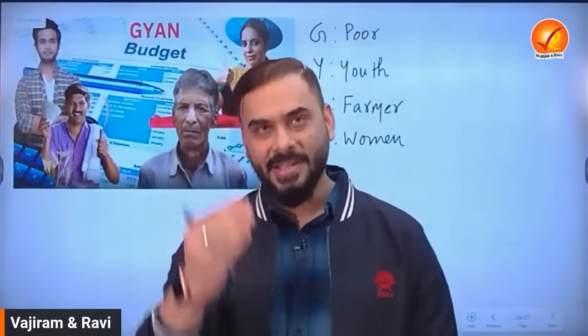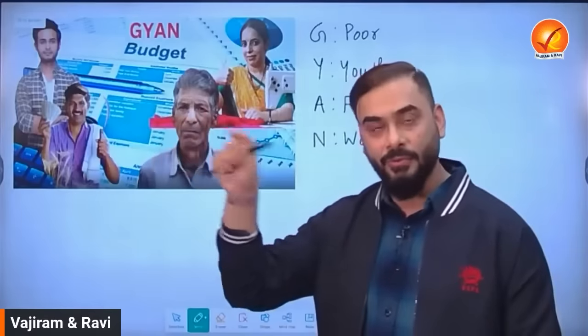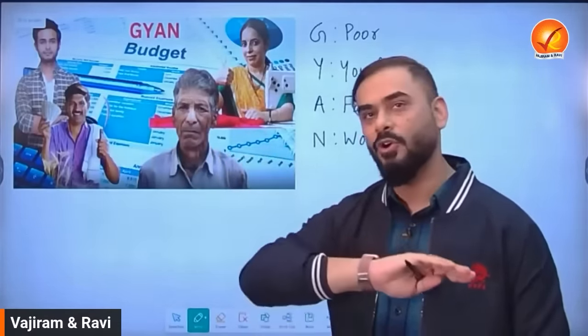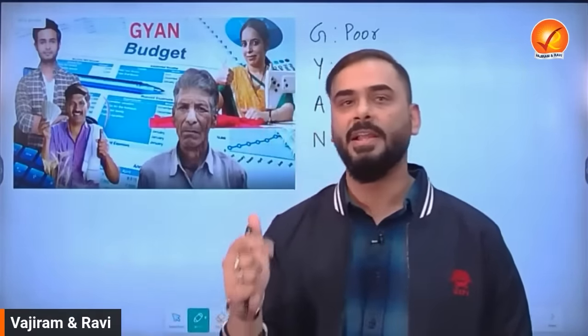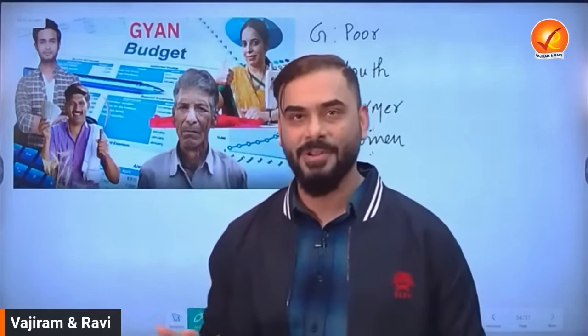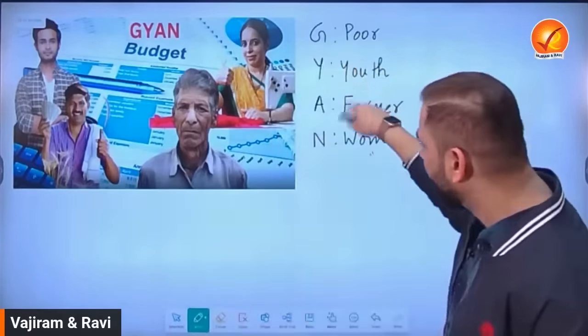If the same topic is asked in mains, the dimension changes. In GS Paper 2, they would ask: what steps has the government of India taken for women empowerment? Gender budgeting becomes just one small component and you must cover other dimensions too. For youth, you can discuss skill development, health, education, and R&D. The interim budget also creates a corpus for funds at low interest rates to promote R&D — this is how you pick things from current affairs and use them for various purposes.